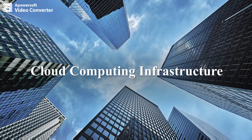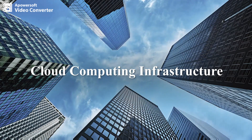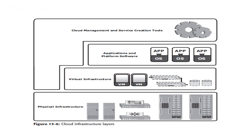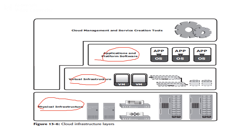Cloud computing infrastructure usually consists of a set of layers. Those layers are: the physical layer or physical infrastructure, virtual infrastructure, application and platform software, and the last one is cloud management and service creation tools.